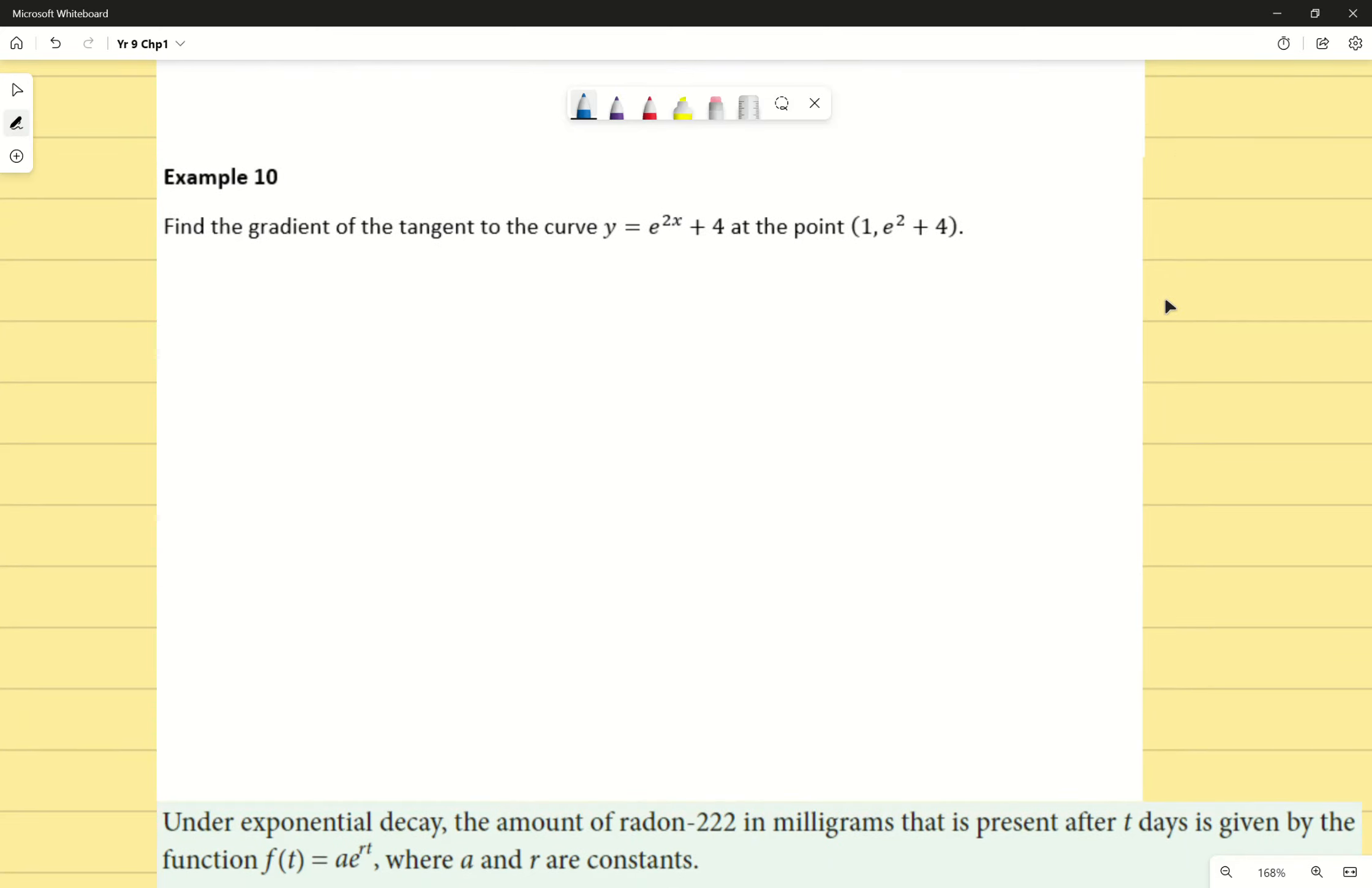Up next, finding the gradient of the tangent of the curve, we have y equals e to the power of 2x plus 4 at the point (1, e squared plus 4). This question is a lot easier than it looks. So first thing you have to do is derive this. So we end up with dy/dx, because this is given to us as y. We derive that, that gives us 2 times e to the power of 2x at x equals 1, because that's the x value of my coordinate. I end up with dy/dx equals 2 times e to the power of 2, or I can just rewrite that as 2e to the power of 2. Again, you can always double check that on your calculator by using the tangent line function to find the gradient of the tangent.